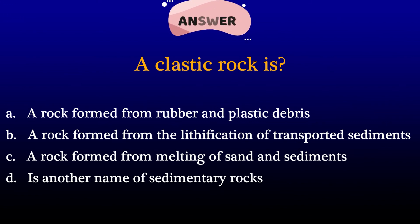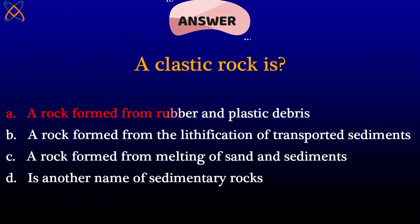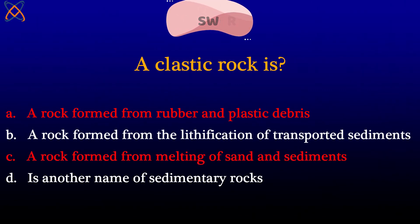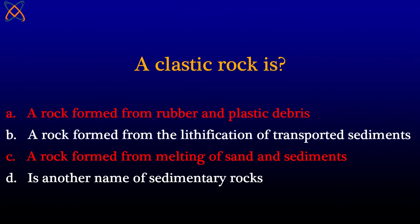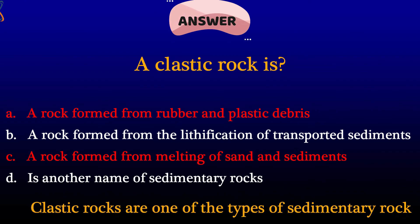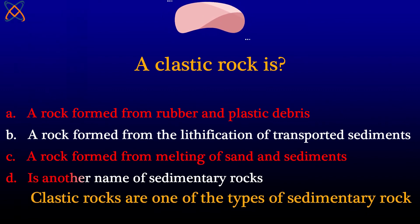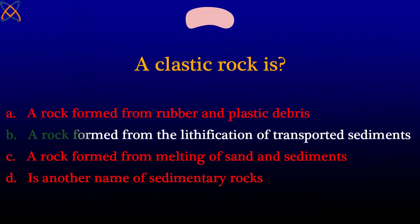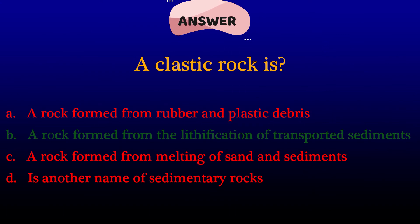Second question: what is a clastic rock? Option A — a rock formed from rubber and plastic debris — no. Option C — a rock formed from melting of sand and sediment — no. Option D — another name for sedimentary rocks — that's too general, since sedimentary rocks can be clastic, evaporite, or carbonate. So the answer is B: a rock formed from the lithification of transported sediments.